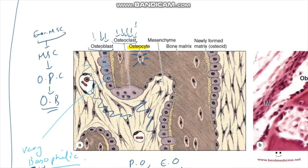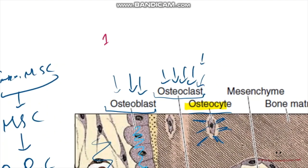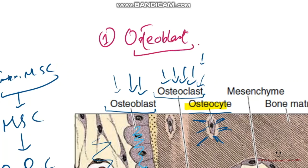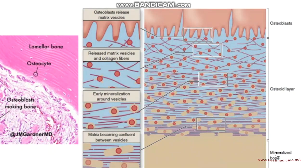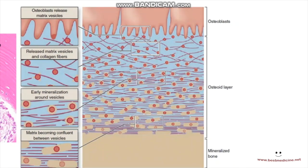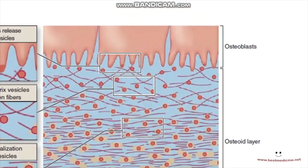Cell type number one is the osteoblast. These are very densely stained basophilic cells present in a simple cuboidal layer inside the periosteum and endosteum. Their function is basically the production of bone — they are able to produce the bone matrix.